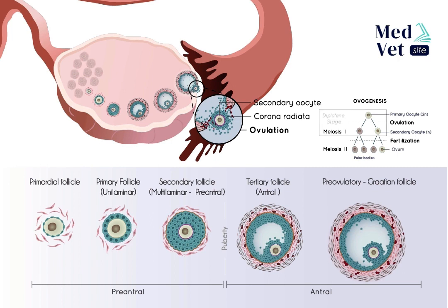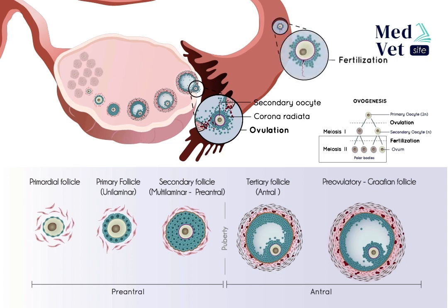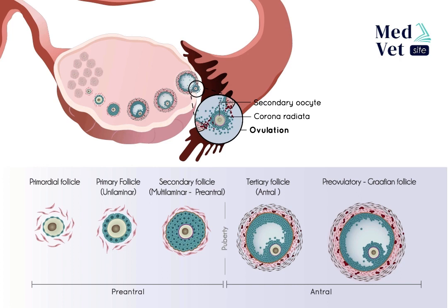This secondary oocyte then begins a second meiosis, which again pauses and is only terminated if the oocyte is penetrated by a sperm. Should this happen, the secondary oocyte becomes a mature ovum, which later becomes a zygote when it has completely fused with the sperm. If fertilization does not occur, the secondary oocyte degenerates around 24 hours after ovulation.